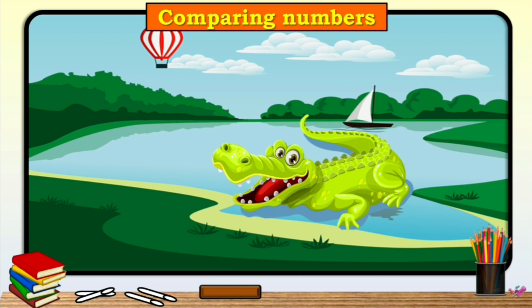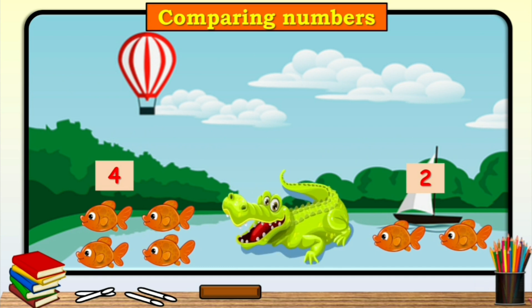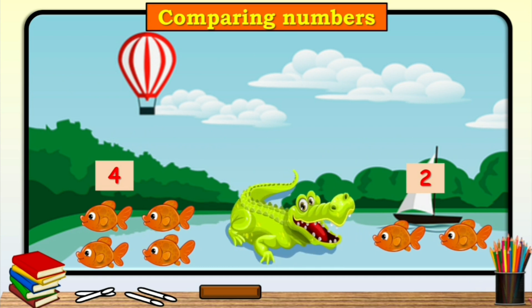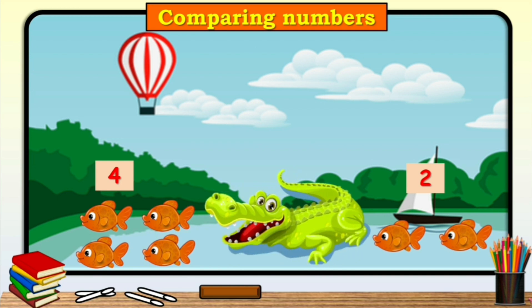Do you know children, once there was an alligator. It always likes to eat what was bigger in quantity. So now, here this alligator had to choose one group from the two groups of fishes to eat. Which group has more fishes? Yes, this one.